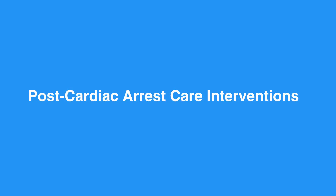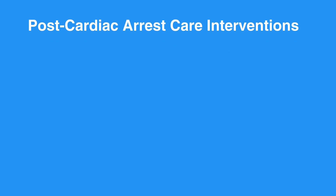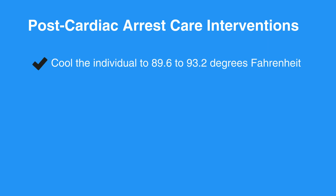Targeted temperature management is recommended for comatose individuals with return of spontaneous circulation after a cardiac arrest event. You should cool the individual to 89.6 to 93.2 degrees Fahrenheit — that is 32 to 36 degrees Celsius — for at least 24 hours.